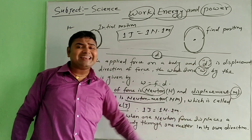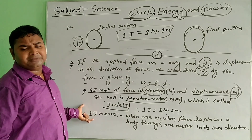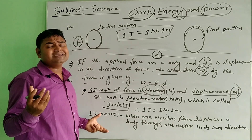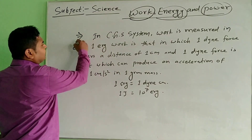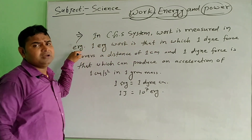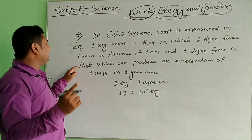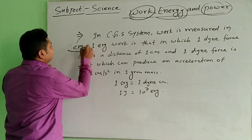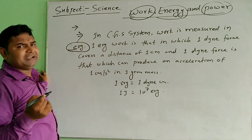So one Joule work means one Newton force applied and displacing a body through one meter. The SI unit of work is Joule. In the CGS system, work is measured in erg. In the SI system work is measured in Joule; in the CGS system work is measured in erg.